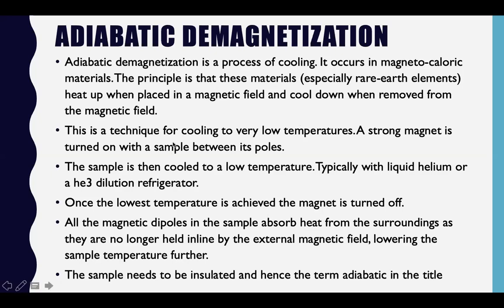For cooling to very low temperatures, a strong magnet is turned on with a sample between its poles — typically using liquid helium or a helium-3 dilution refrigerator. Once the low temperature is achieved, the magnet is turned off. All the magnetic dipoles in the sample absorb heat from the surroundings as they are no longer held in line by the external magnetic field, lowering the sample temperature further. The sample needs to be insulated, hence the term 'adiabatic' in the title.